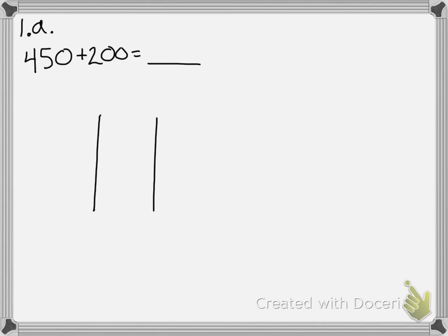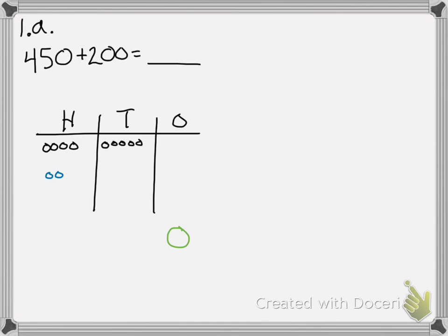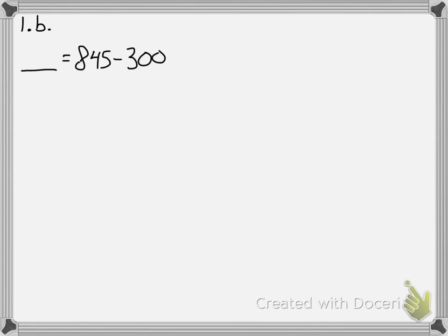I'm going to use chips on a place value chart for this first one. So I set up 450 — one, two, three, four in the hundreds and one, two, three, four, five in the tens. I've got 450 and then 200, and I add these up. I have nothing in my ones place, five in my tens place, and six in my hundreds place, so I get 650.